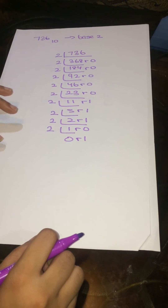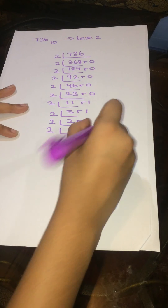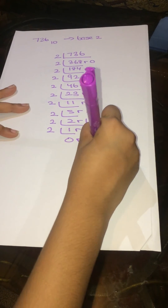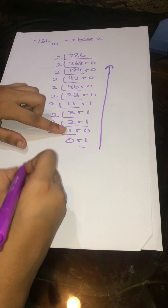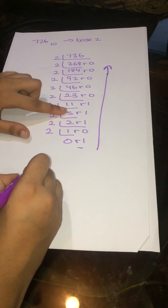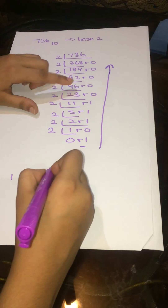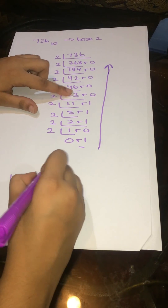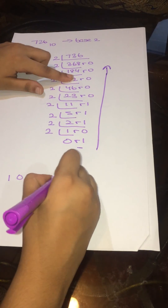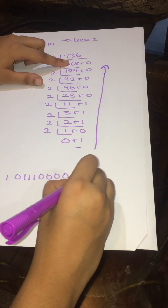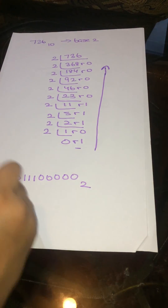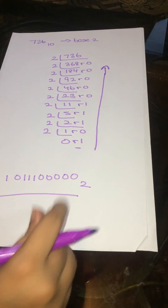Then finally we write the numbers starting from the last remainder going up in the form of base 2. So it's 1, 0, 1, 1, 1, 1, 0, 0, 0, 0, 0, 0, 0 in the form of base 2. And finally, that's your answer.